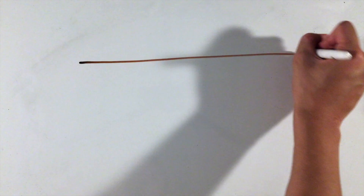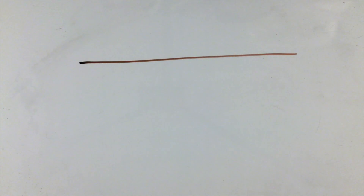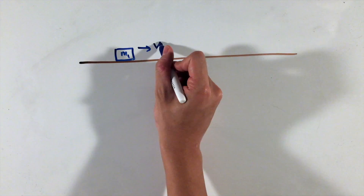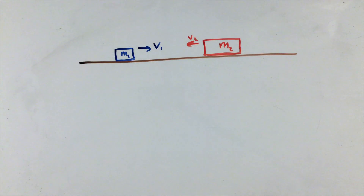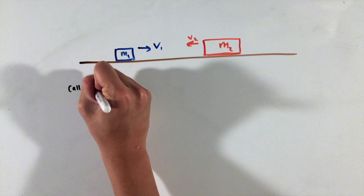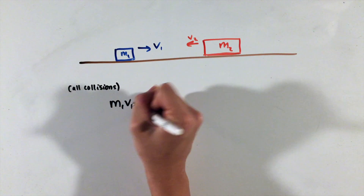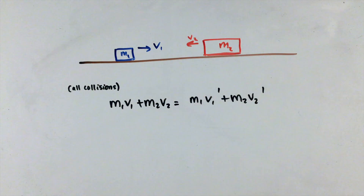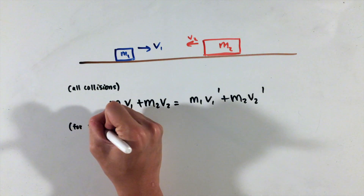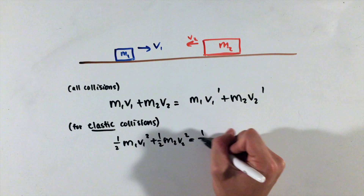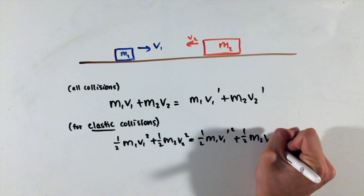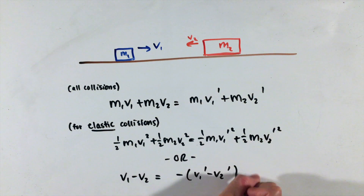With these topics clarified, solving your classic inelastic and elastic collisions will still follow the same exact process. For both situations, use the conservation of momentum equations to equate the momentums before and after. For elastic situations specifically, include either the energy conservation equation or the relative velocity swap equation.